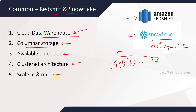Another common feature is scaling — scale in and scale out. Whenever there is increased demand for data processing, it can automatically scale out, and when there are no loads on the server it can automatically scale in. This scale in and scale out capability is available on both data warehouse systems, though there are certain differences in the speed of scaling, which we'll cover in the differences section.